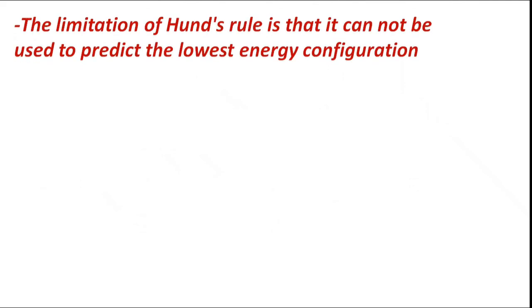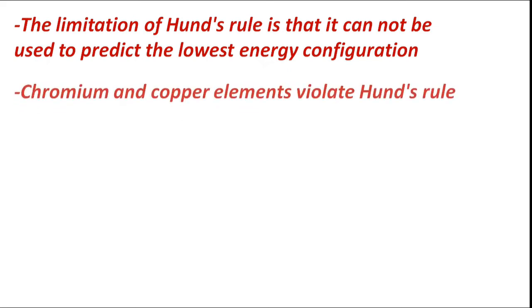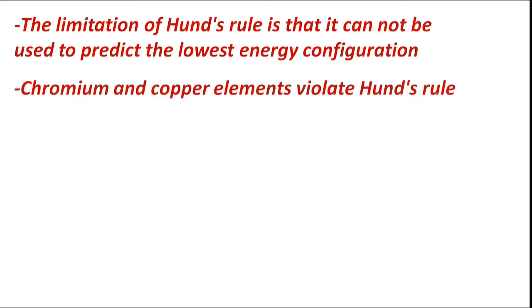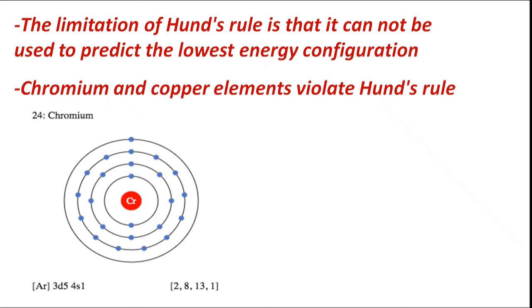The limitation of Hund's rule is that it cannot be used to predict the lowest energy configuration. For example, elements like chromium and copper violate Hund's rule.